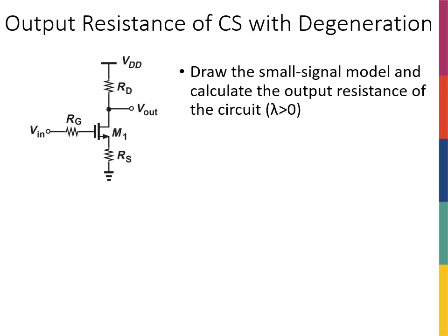Similar to the normal common source where we looked at input and output resistance after calculating the gain, we're going to look at the input and output resistance of the common source stage with degeneration.